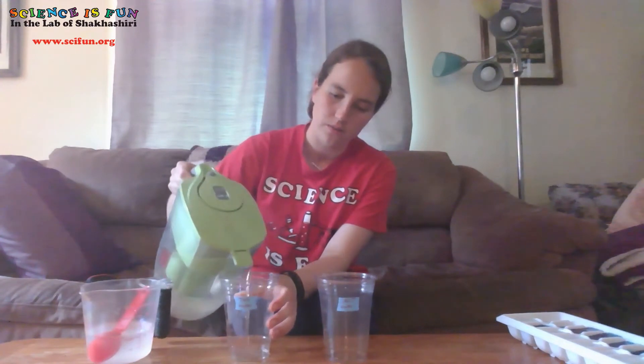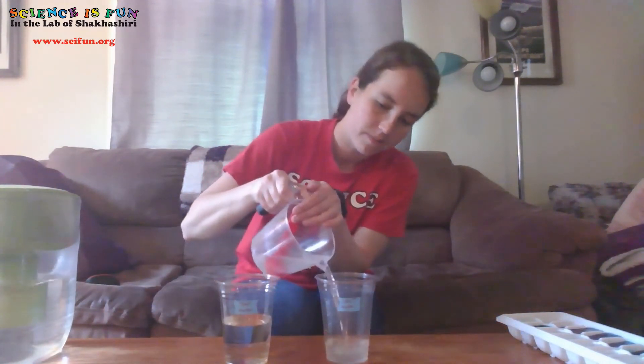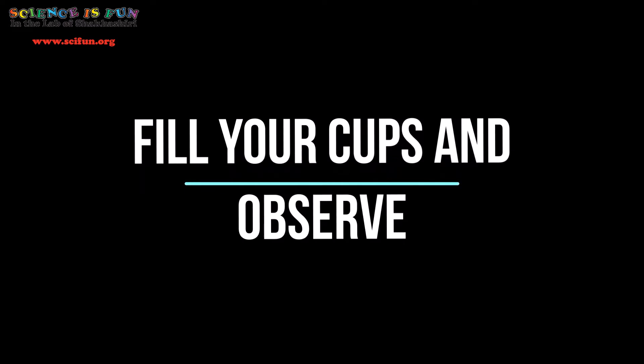I'll give you a chance to go ahead and gather your supplies. Now, time to get going with our experiment. First we're going to fill each of our cups halfway up with water — I'll start with the tap water, then fill the other glass about halfway up with salt water. What do you notice here? Make some observations. You may notice that one cup looks a little bit murkier than the other.